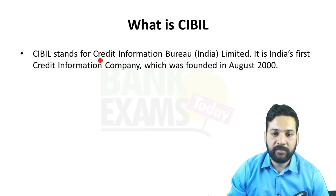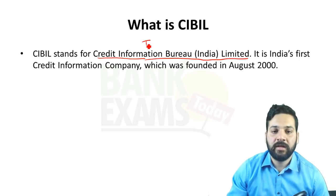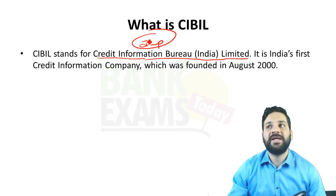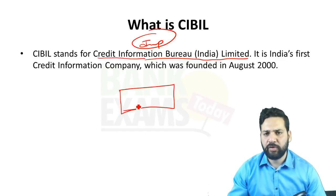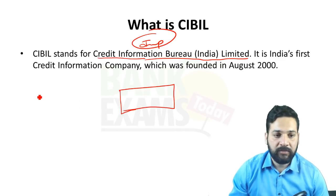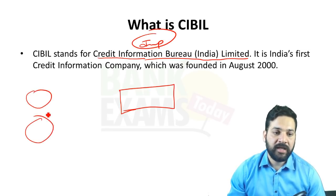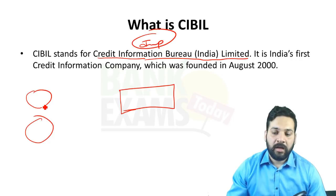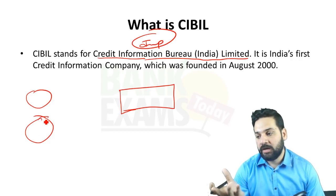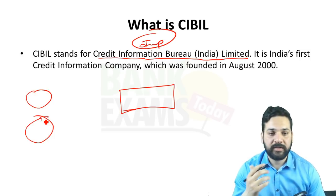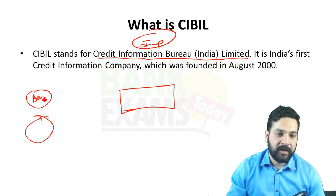The full form of CIBIL is Credit Information Bureau India Limited — this is a very important question. CIBIL is a kind of central database in which various banks, who are the clients of CIBIL, submit their data related to their borrowers — the people who took loans from these banks.